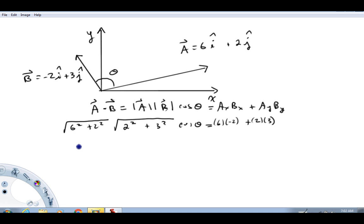So I'm gonna go ahead and kind of simplify this down a little bit, 36 and 4 is 40, so this guy's root 40, and let's see, 4 and 9 is 13, so that's root 13, cosine theta equals, and this is negative 12 plus 6, so that's going to be minus 6.